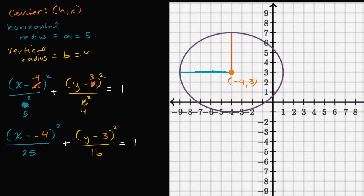And of course, we could simplify this a little bit. If I subtract a negative, that's the same thing as adding a positive, so I can get rid of, I can just, instead of saying x minus negative four, I could just say x plus four, and there you have it. We have the equation for this ellipse.